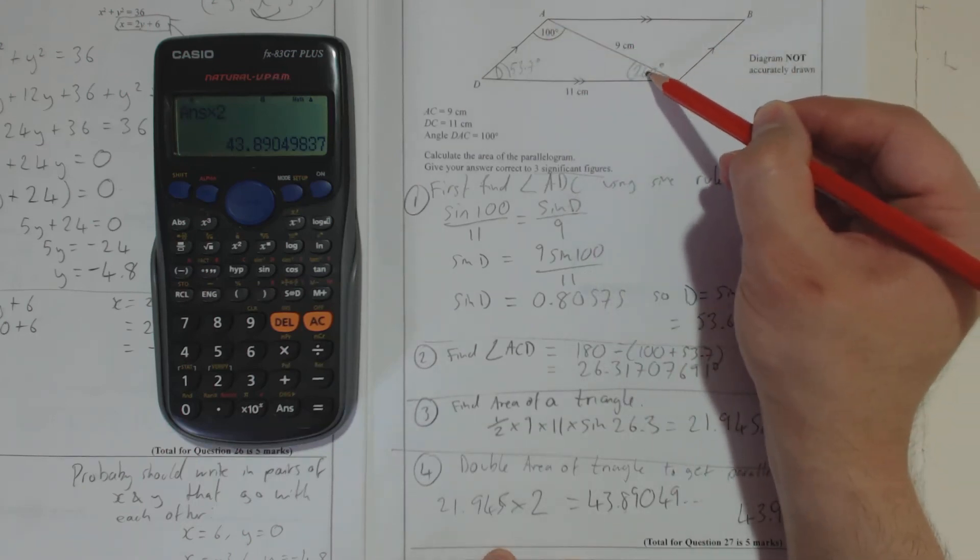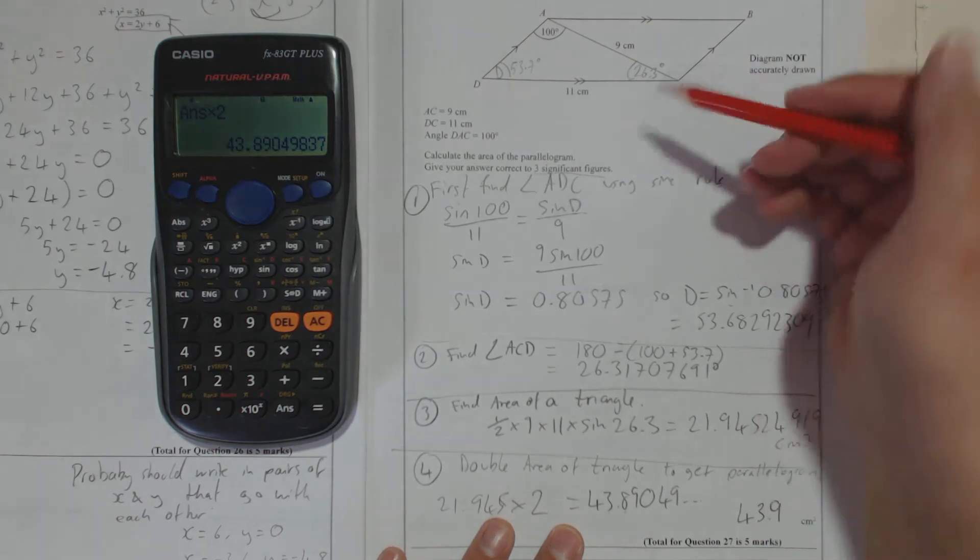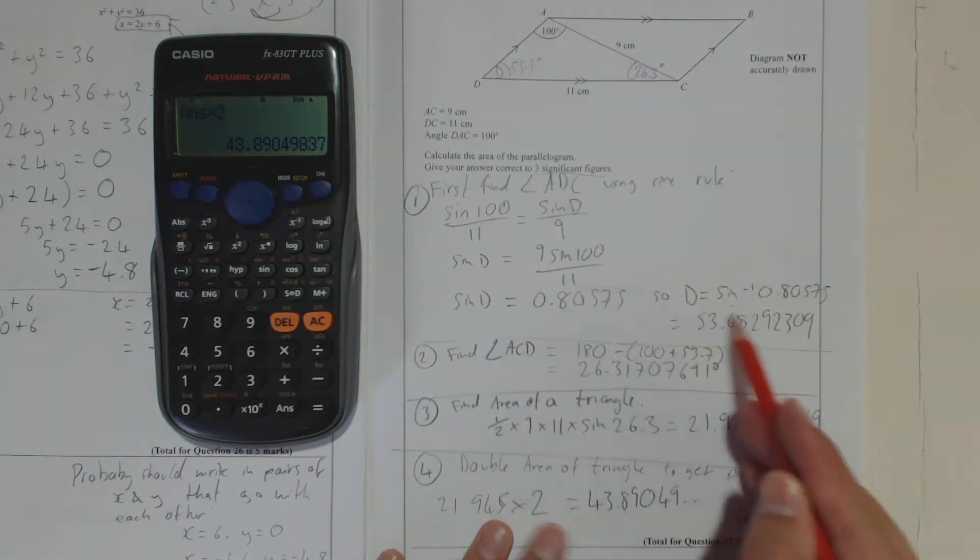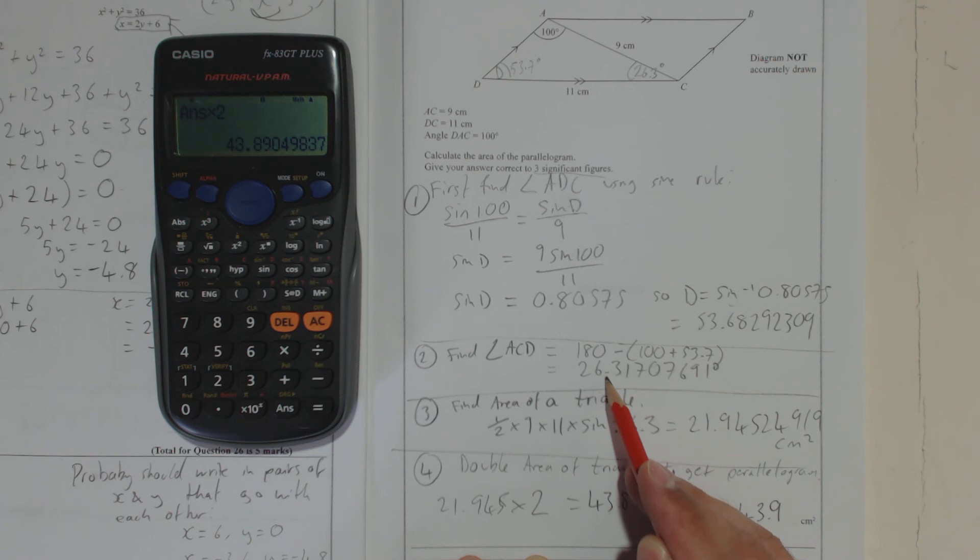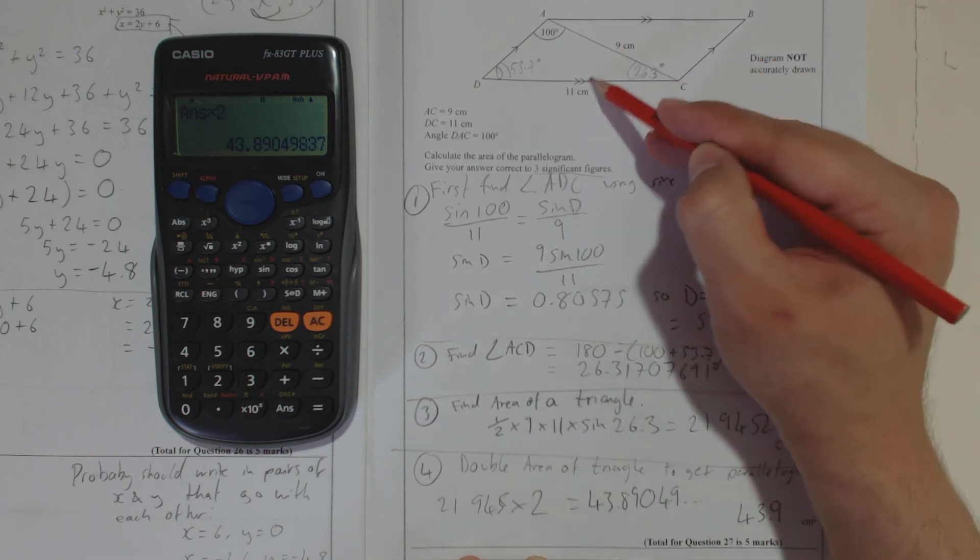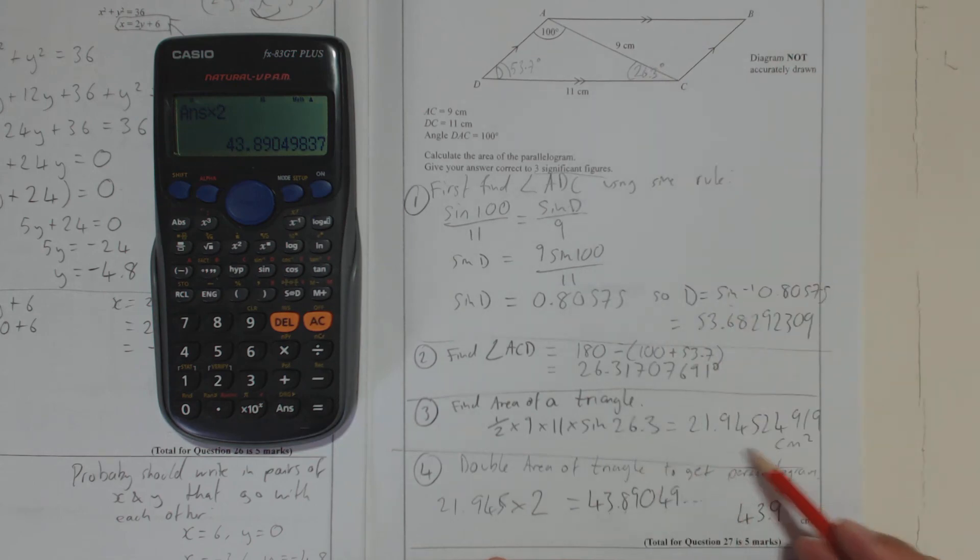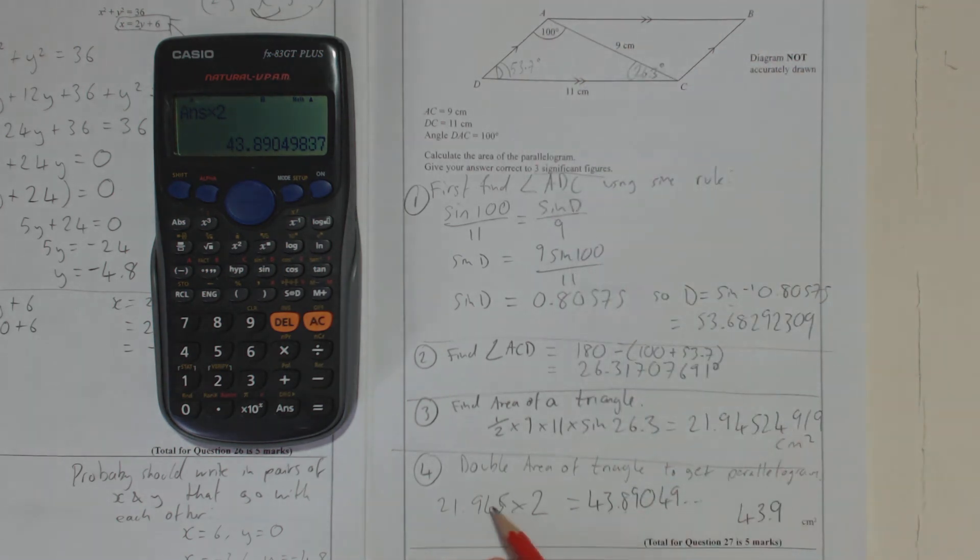Now the problem was that we didn't have that angle, so what we had to do is we found this angle using the sine rule, because the sine rule works on opposites. We have an angle here opposite this side. We've got this side here, which means we could find this angle here, so we did that using the sine rule. That's all there, and then once we've found that angle, 53.7, we took those two angles away from 180 to get the other one. So now we've got the angle we need, so now we can find the area of a triangle by doing half times 9 times 11, which is the two sides around this angle, and then times by the sine of this angle, which is 21.94524919, and then because that's one of the triangles, but we want the entire thing, we just double it. So we took that number times it by 2, we got 43.89049, and then we rounded it to three significant figures, which is 43.9 centimeters squared.